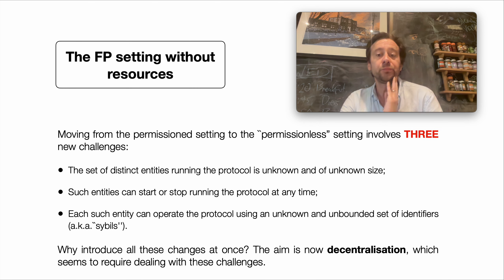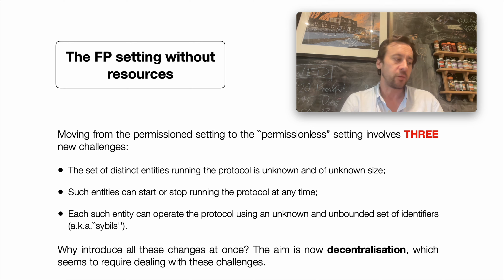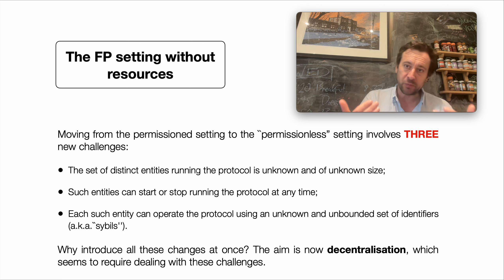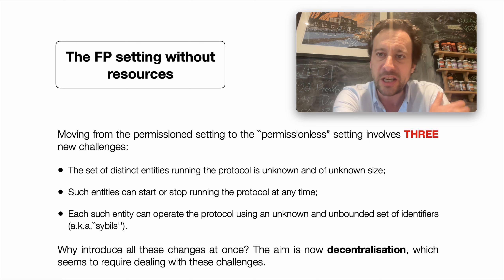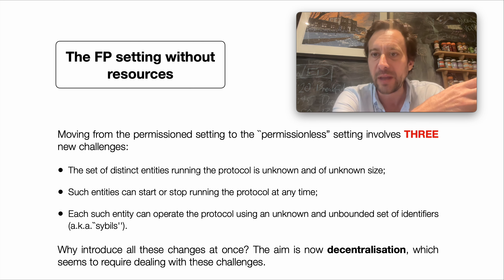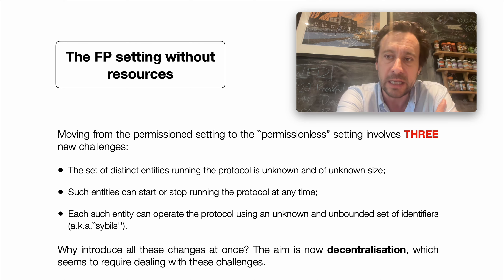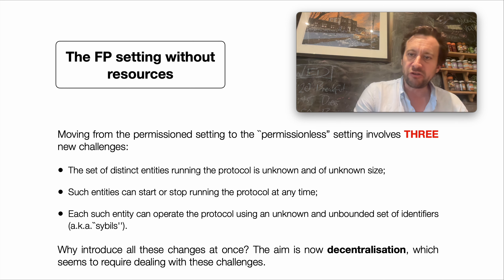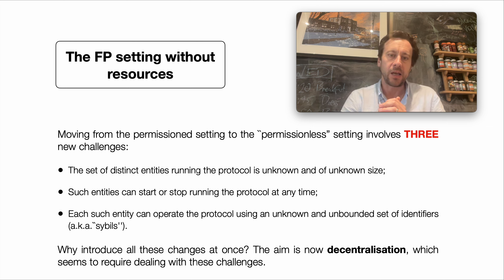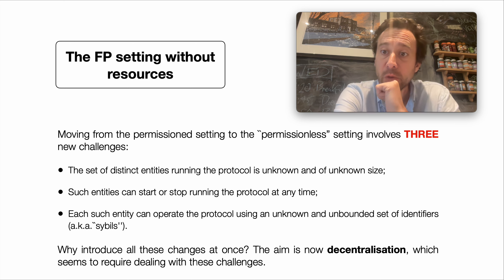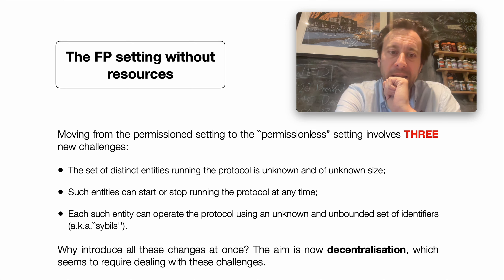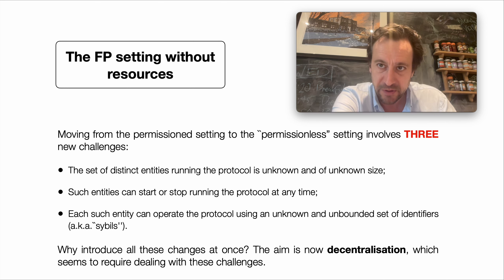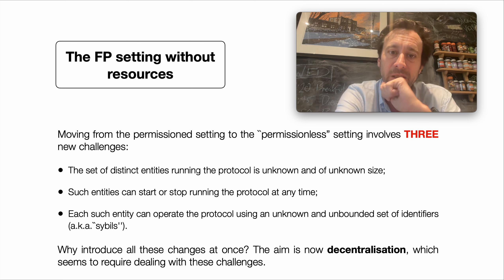I should make it clear that I'm not going to attempt to formally define what we mean by decentralization here. We're trying to formally define what we mean by a permissionless protocol and the permissioned setting, but we're leaving decentralization as a vague term, just observing that if we want to work with decentralized protocols then it seems we have to deal with these three new challenges. It will be interesting when we consider impossibility results to analyze which of these three new challenges is really driving the new impossibility result — whether we need all three or really only one of them.